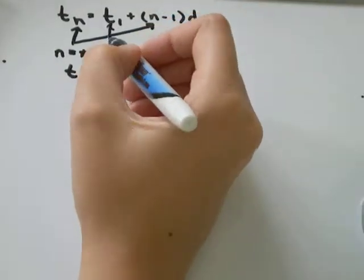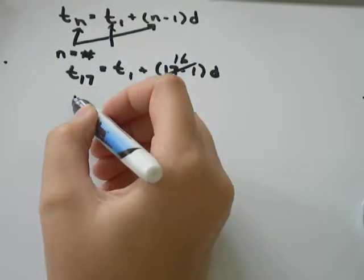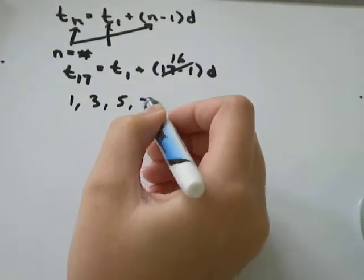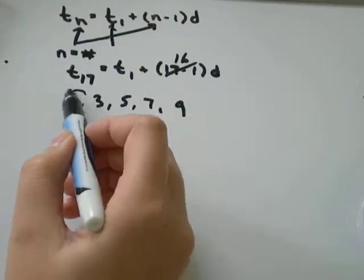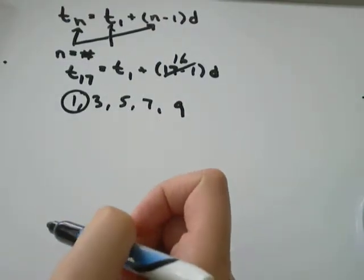T_1 stands for the first term. So if you had something like 1, 3, 5, 7, 9, t_1 is just the first number in the sequence.